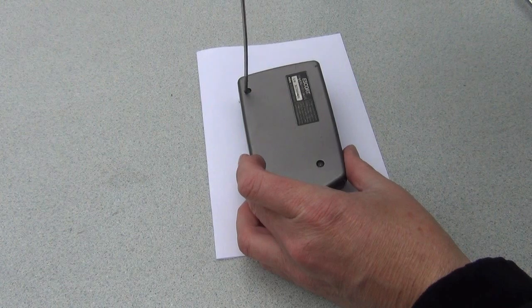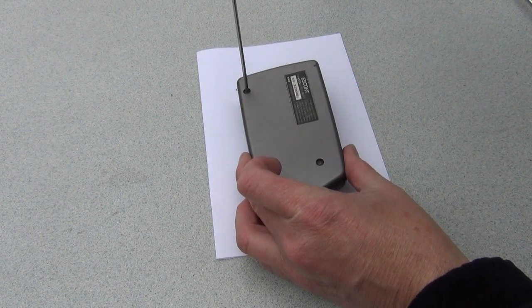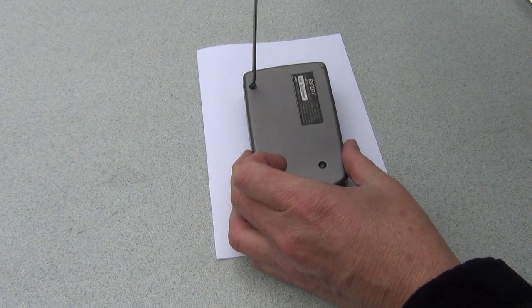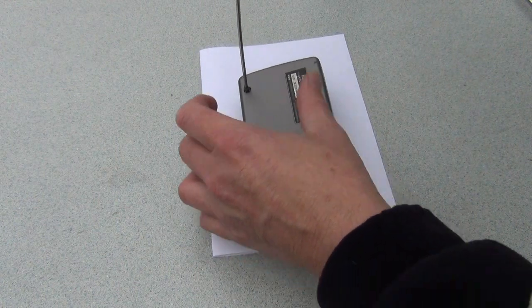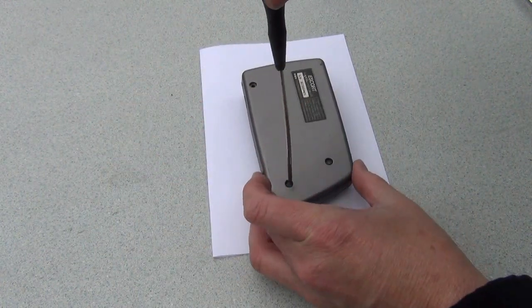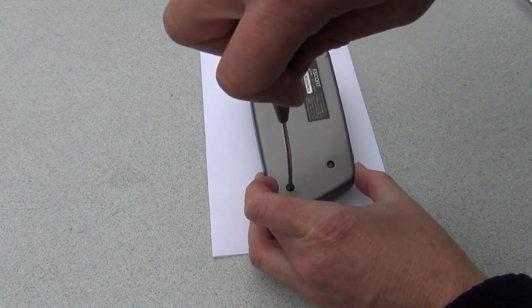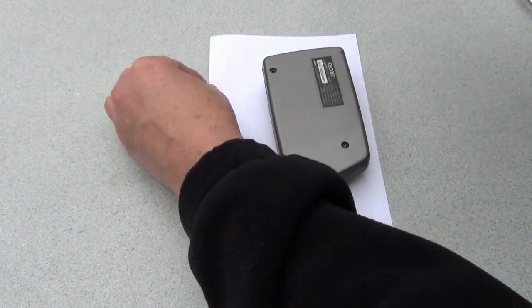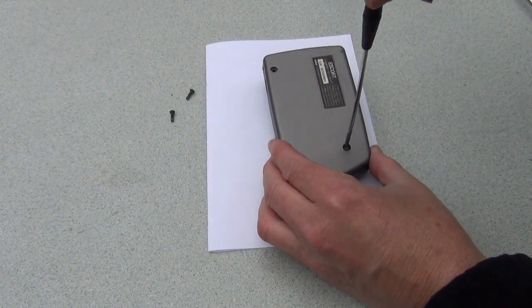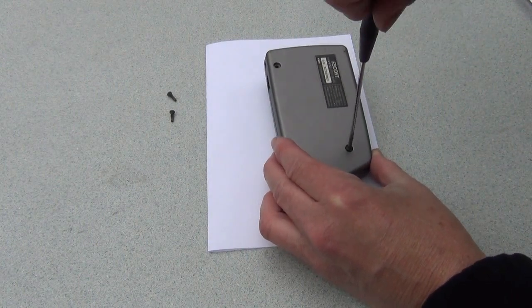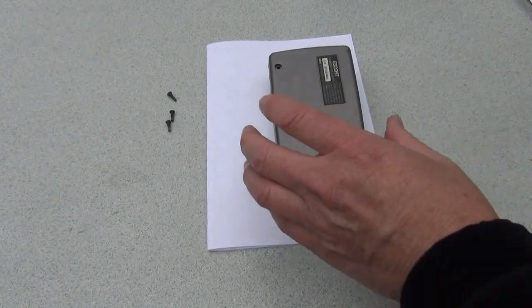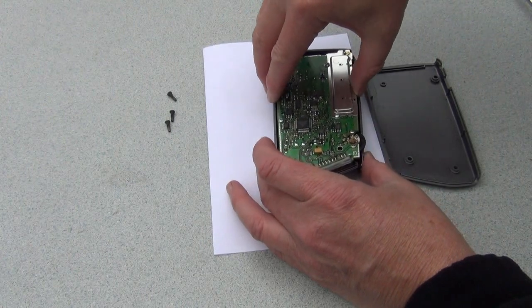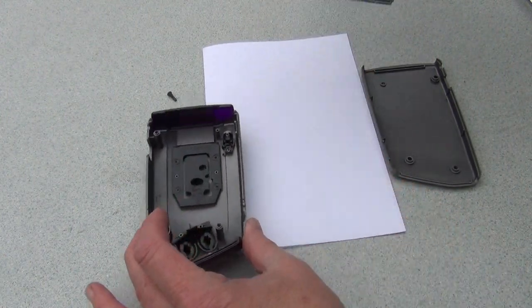First thing we're going to do is take out three screws, all the same size. Leave this upside down in that position.